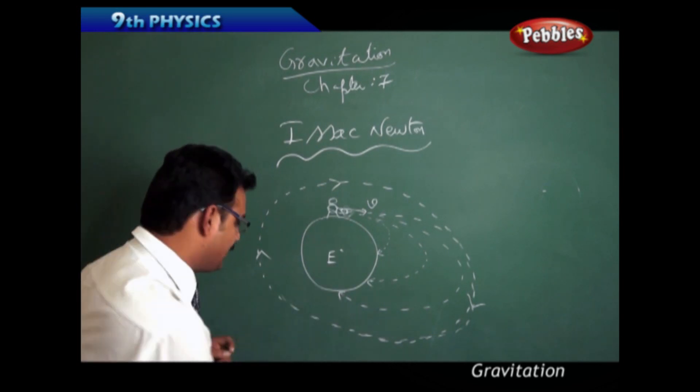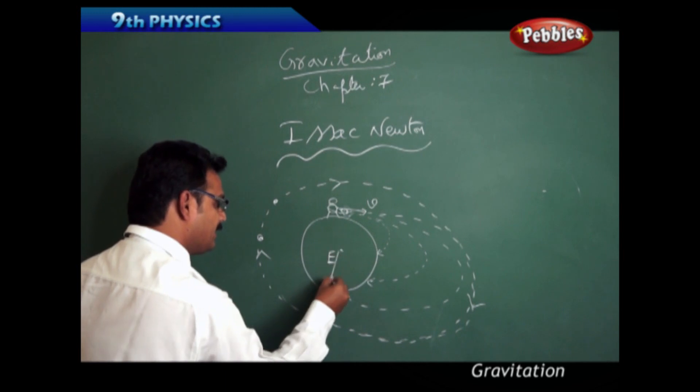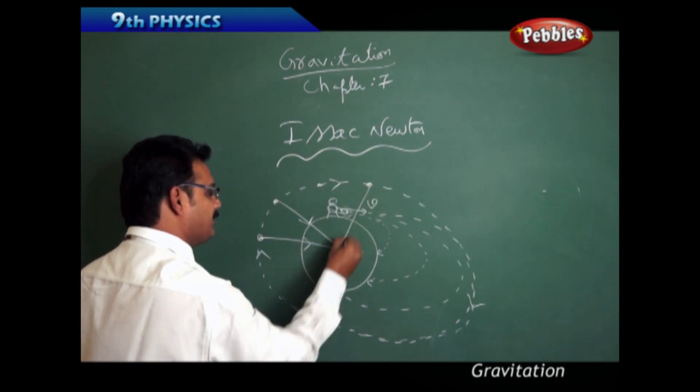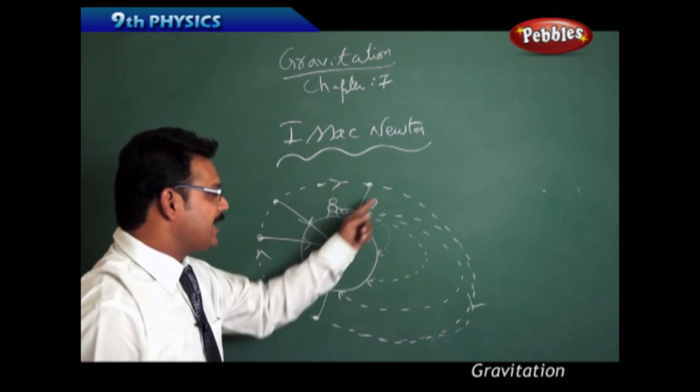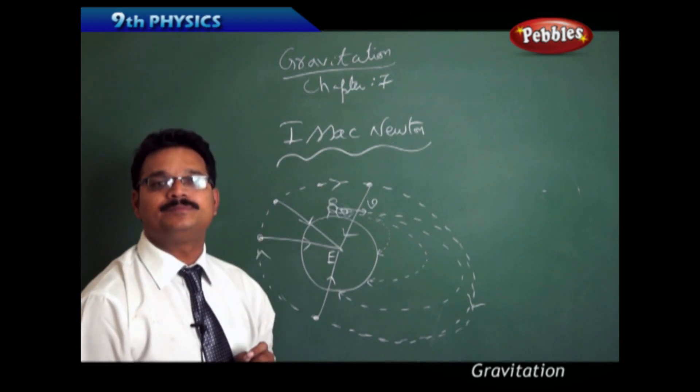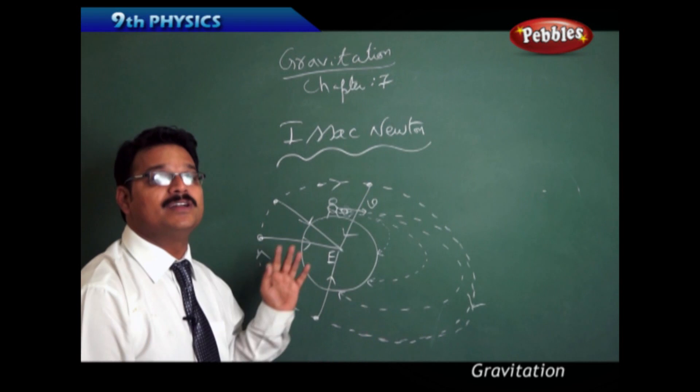Why does it continue to rotate around the earth? Because earth, at each and every point, is attracting that body. That attractive force makes the body stay in this circular path.